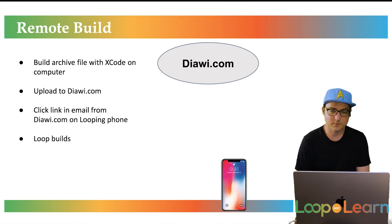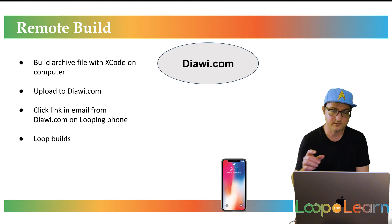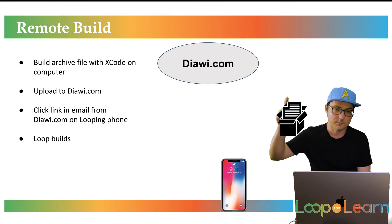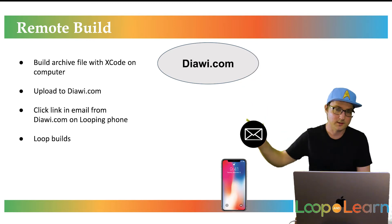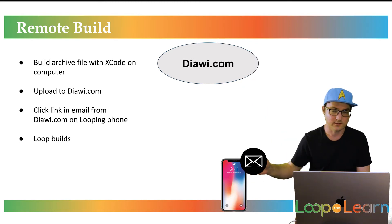In order to prep for the remote build, first you're going to have to build Loop in Xcode, just like you would to your phone, except you're going to build it to an archive file. You're going to take this archive file and upload it to diawi.com. Diawi will send you an email, you click a link in that email on your phone, and it builds right on your phone and you're good to go.